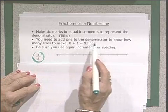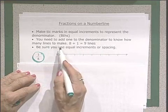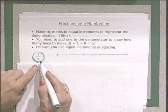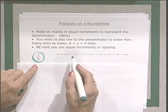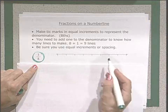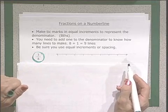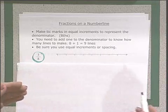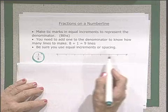You need to add one to the denominator to know how many lines you need to make. Eight plus one is nine, so we need to make nine tick marks so that we have equal increments. We use the term eyeballing, because we're not going to get out a ruler and measure, we just want to make sure we have equal spaces.